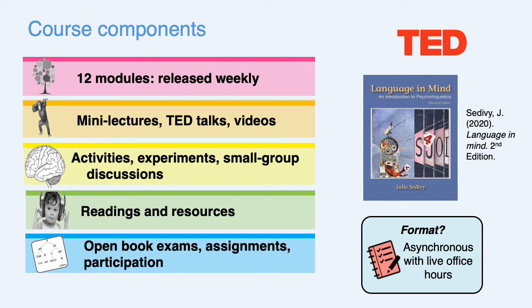The course is made up of 12 modules released weekly, based on self-paced learning — the whole module is released at once and you have the week to complete the material. Each module consists of mini lectures, TED talks and videos, activities and experiments, and small group discussions, all on the Brightspace site. There will be readings and resources. The main textbook is available as hard copy or digital with the option to rent. Grading is based on two open book exams, a few assignments, and participation in online activities and discussions. The format is completely asynchronous, so you can take the course from wherever you are in the world, with optional weekly office hours as the only live elements.